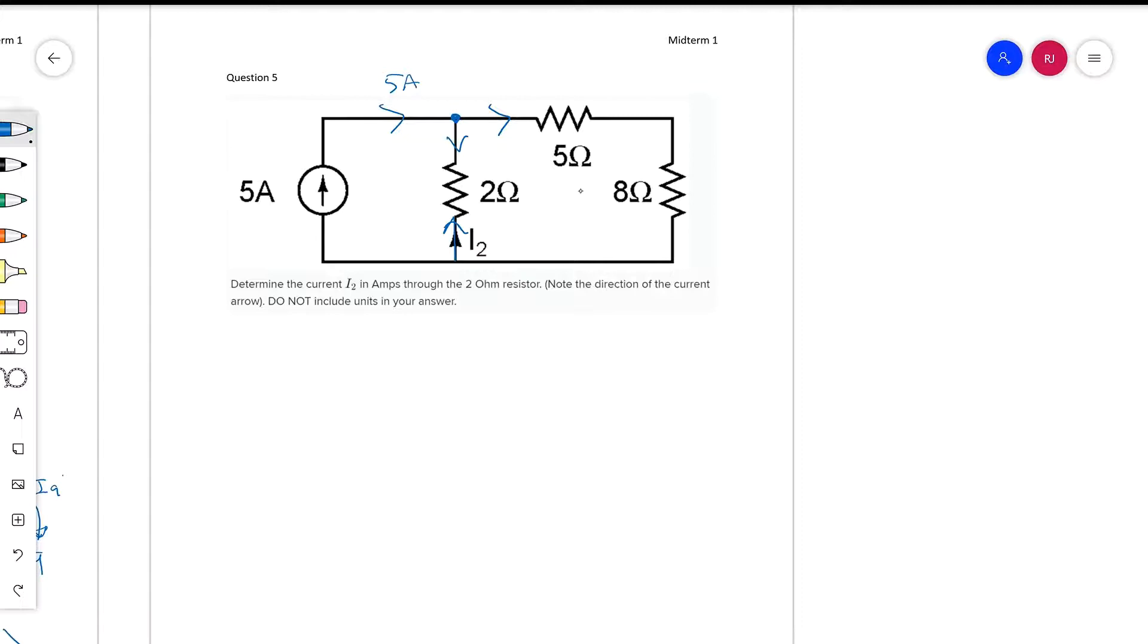I'll call this I2 prime. I'll call this here I5,8 to denote the current going through the series combination of the 5-ohm resistor and the 8-ohm resistor.